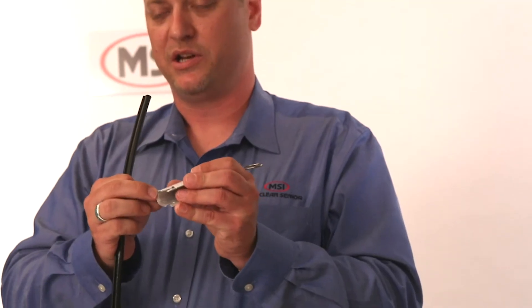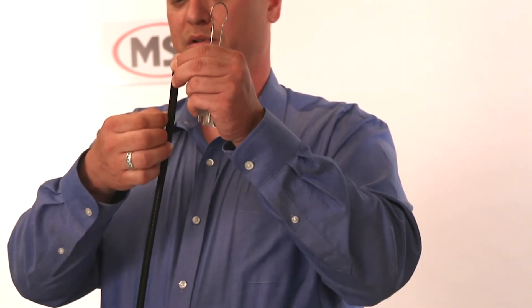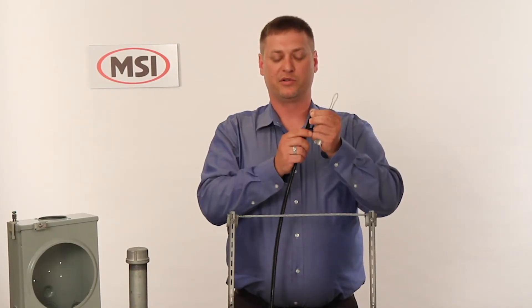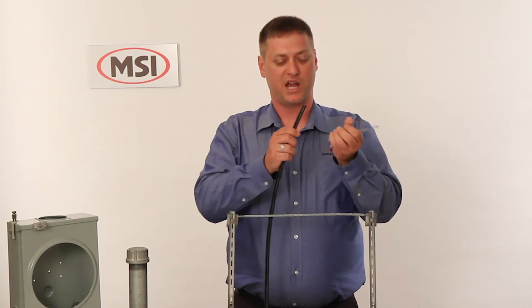The small indentation here is to be used as a tool. We do not want to put any kind of sharp utility knives or anything of that nature between the messenger and the cable because we do not want to have any damage to the jacket on the coax.